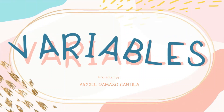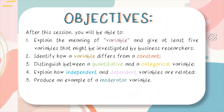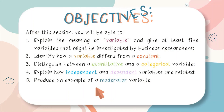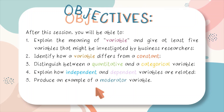It is understood that after you finish this presentation, you will be able to explain the meaning of variable and give at least five variables that might be investigated by business researchers. Identify how a variable differs from a constant, distinguish between a quantitative and a categorical variable, explain how independent and dependent variables are related, and produce an example of a moderator variable.